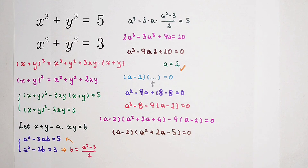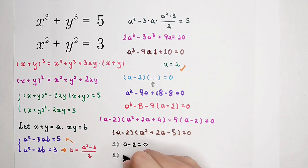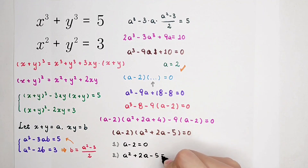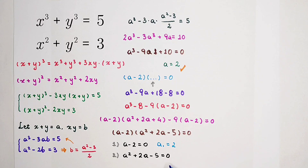So we have two cases. Case one: a minus 2 equals 0, giving a₁ equals 2. Case two: a squared plus 2a minus 5 equals 0. For case one we have the simple solution a₁ equals 2. For case two, the discriminant delta is positive, giving irrational roots: a equals negative 1 plus or minus square root of 6. So a₂ and a₃ are more complicated.